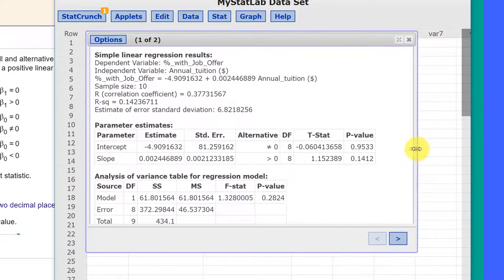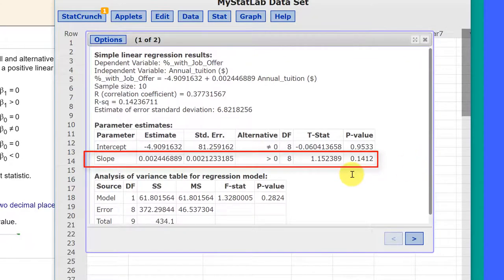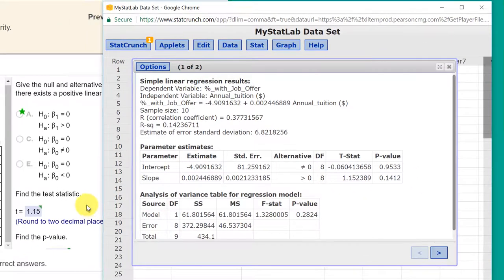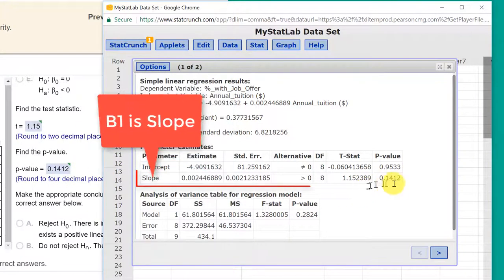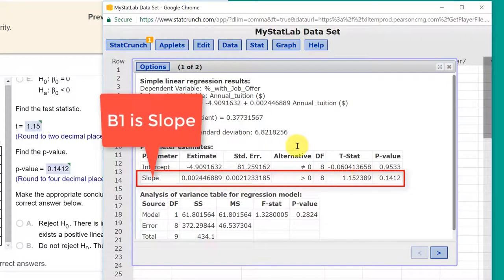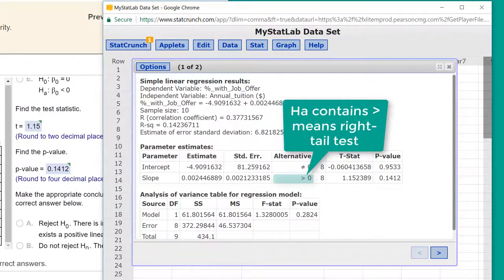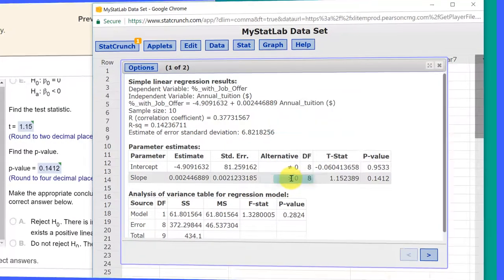I'm going to expand this so you can see those. Our t statistic, 1.15, which is the answer they want there. We scroll down, p-value, 0.1412 they want, and that's the value we have. Again, because our model is that the slope is positive, that's our alternative, which is a right-tail test.